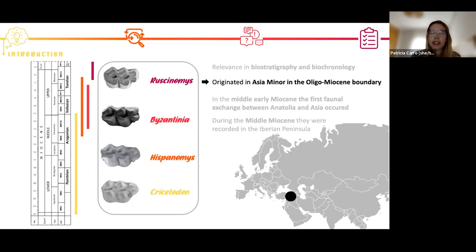They originated in Asia Minor in Anatolia in the Oligocene-Miocene boundary with the species Cricetodon versteegi. After that, during the middle early Miocene, they occupied other regions as the east of Asia. And during the middle Miocene, they reached their maximum development in terms of morphology and geographical range, and they reached the Iberian Peninsula.